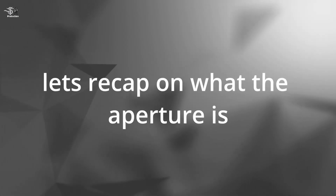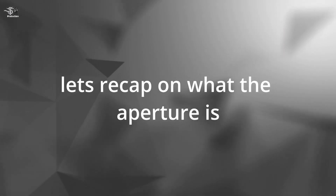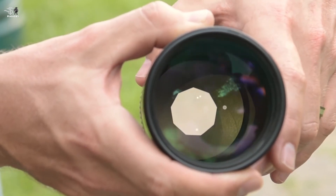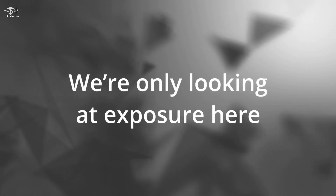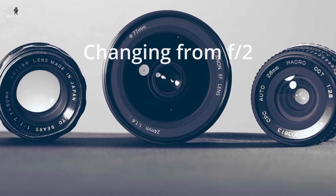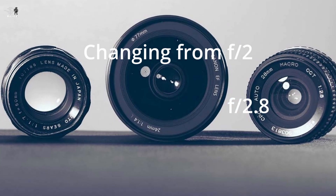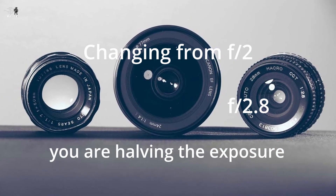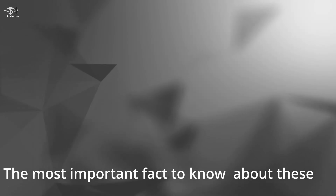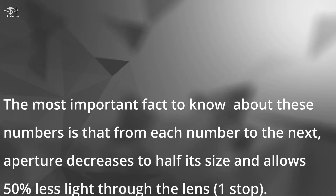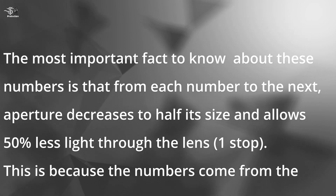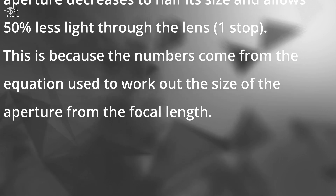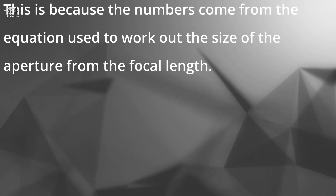Before we go any further, let's recap on what the aperture is. The aperture is the hole in the lens which the light passes through, and it controls both the exposure and the depth of field — though we are only looking at exposure here. If you are changing from f2 to f2.8, you are halving the exposure. To do so, you're halving the area of the open aperture in the lens. From each number to the next, the aperture decreases to half its size and allows 50% less light through the lens.